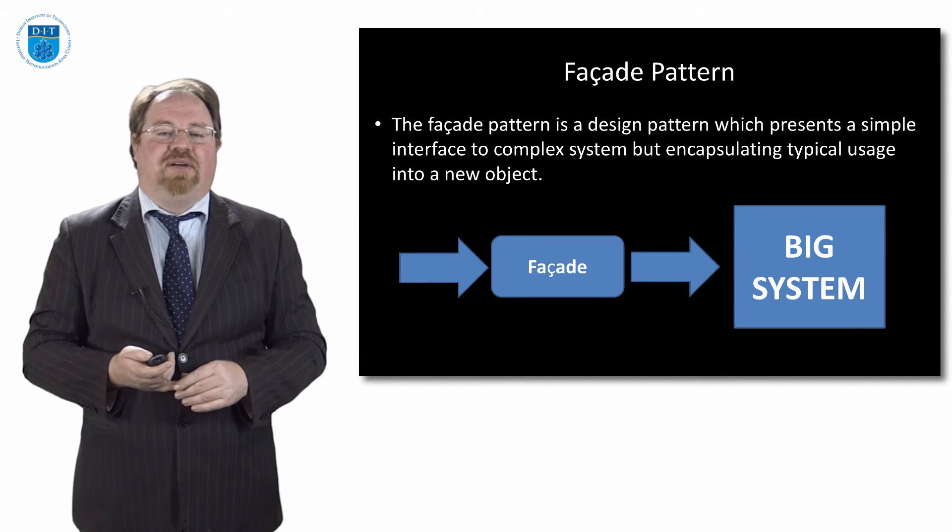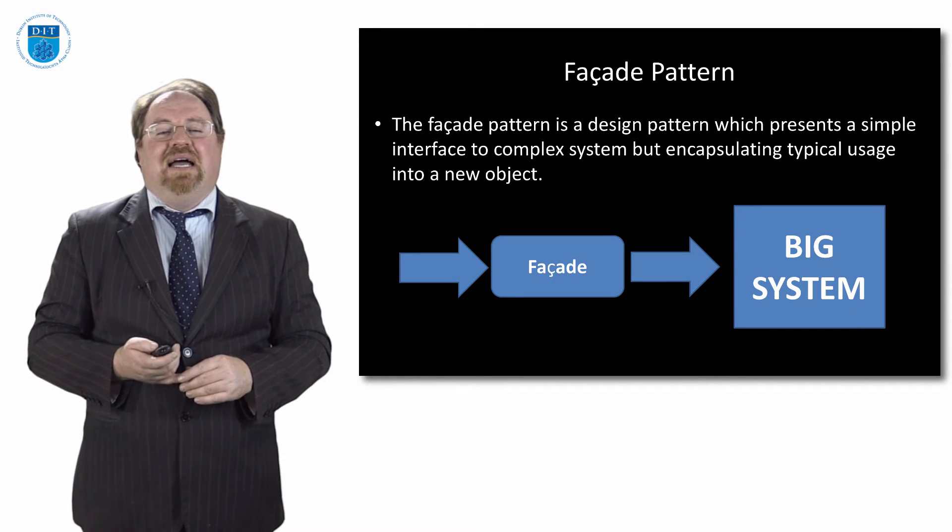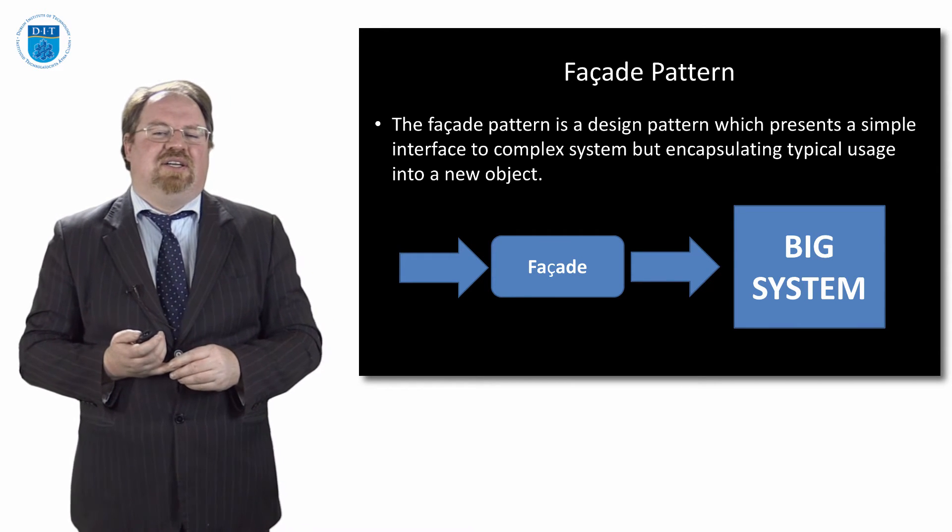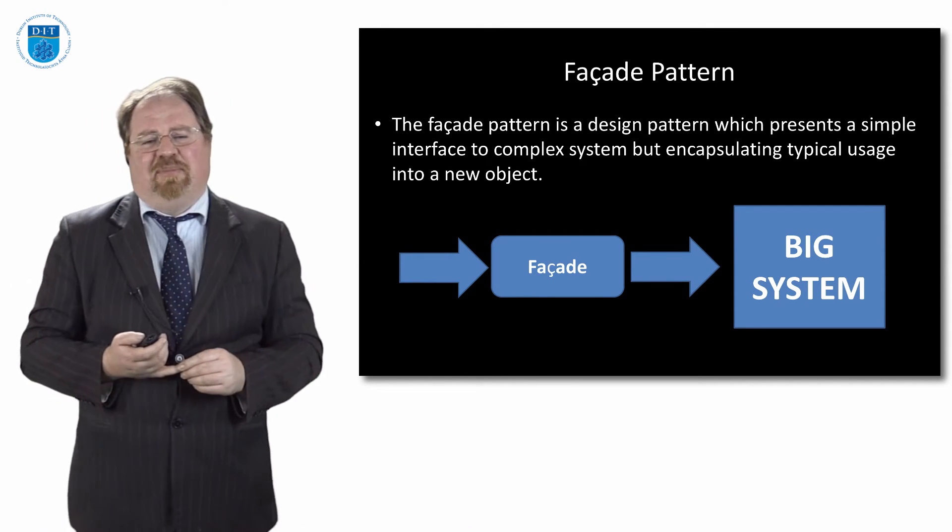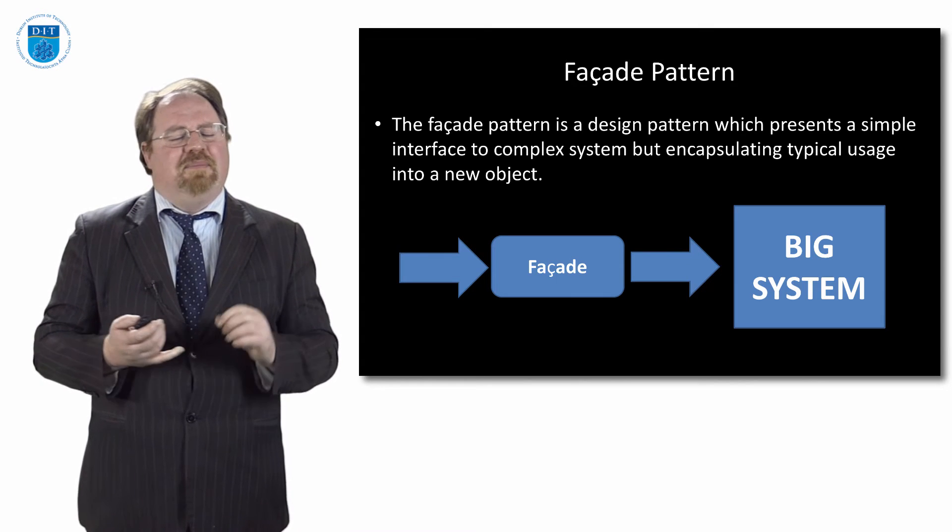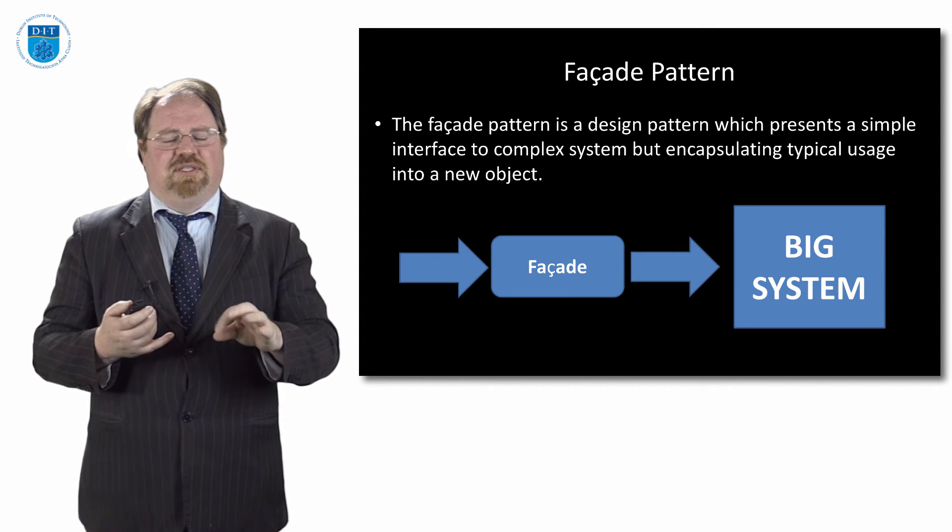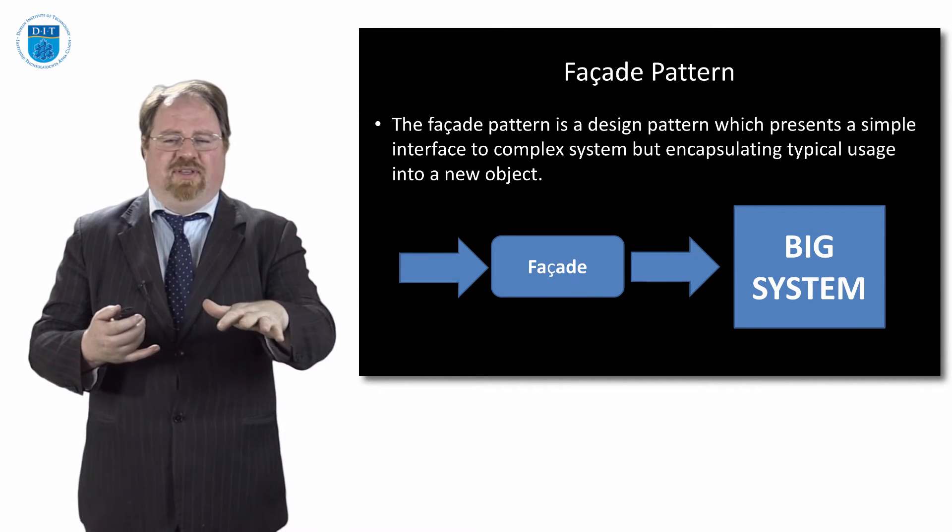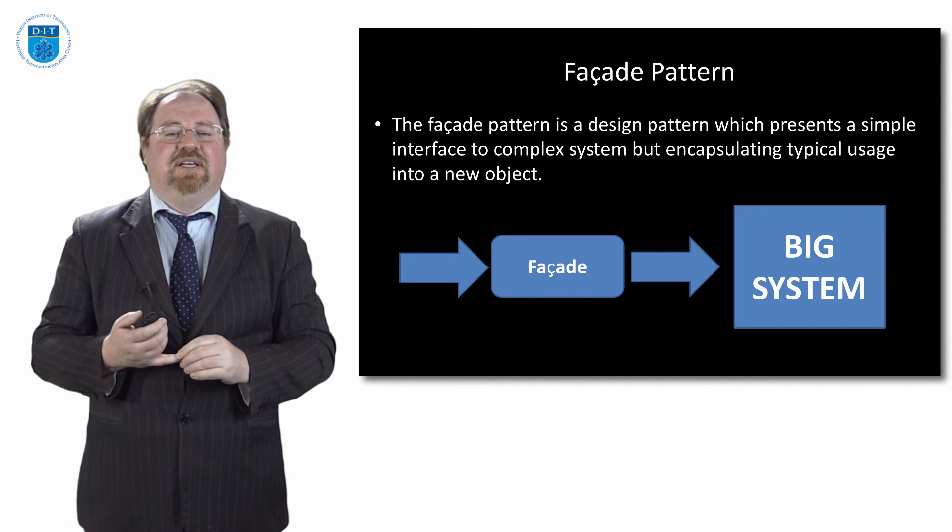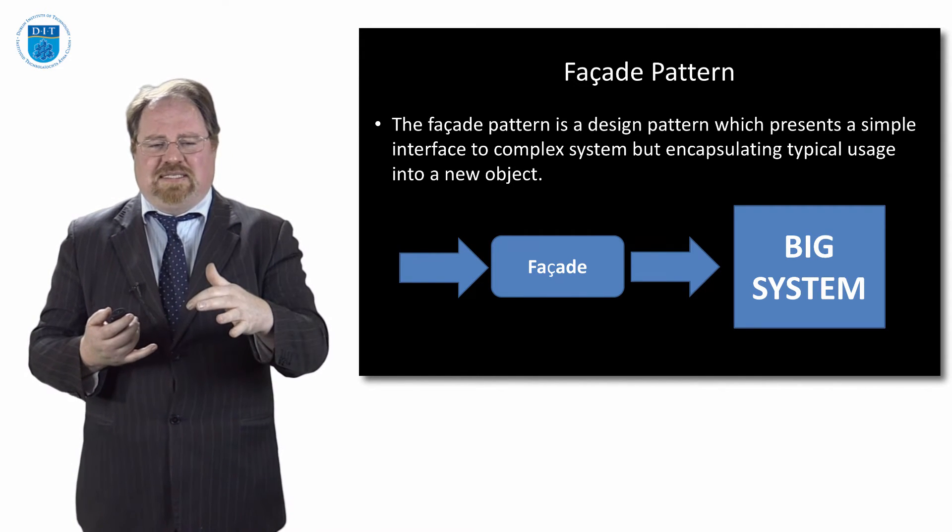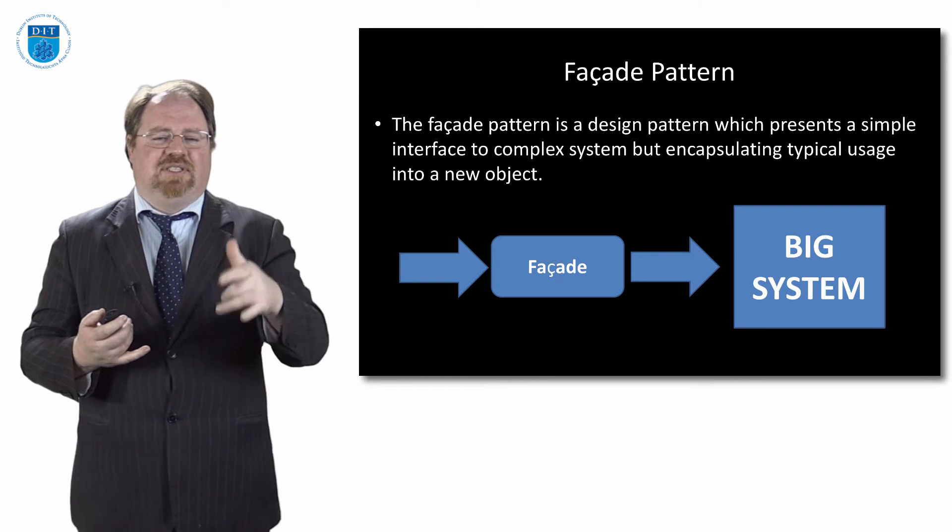The facade pattern allows you to create a simple interface to a complex system. It's a bit like the decorator pattern. What it does is if I'm interacting with an object and I have to do six steps to interact with the object, the facade pattern says record those six steps.